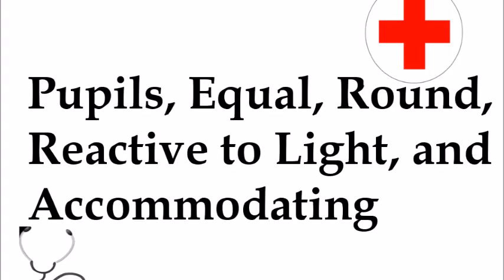PERLA is pupils are equal, round, reactive to light, and accommodating. This is often used in a neurological assessment to make sure that the eyes are functioning right and that there's no head injury. What people will do is shine a light in the person's eye and notice if they're round and they're reacting. When you shine the light, they should constrict and when you remove it, they should dilate. And when accommodating, what that means is when one pupil dilates or constricts, the other one should be as well. They shouldn't be doing their own separate thing. They should be following each other.